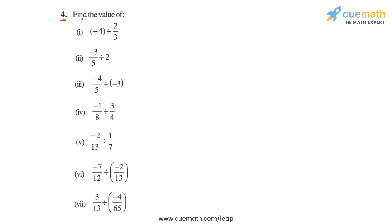In question 4, we have to find the value of each of the following division expressions involving rational numbers. To do this, we will make use of the fact that rational numbers can be divided just like fractions. To divide one rational number by another, we multiply the first rational number (the dividend) with the reciprocal of the second rational number (the divisor).